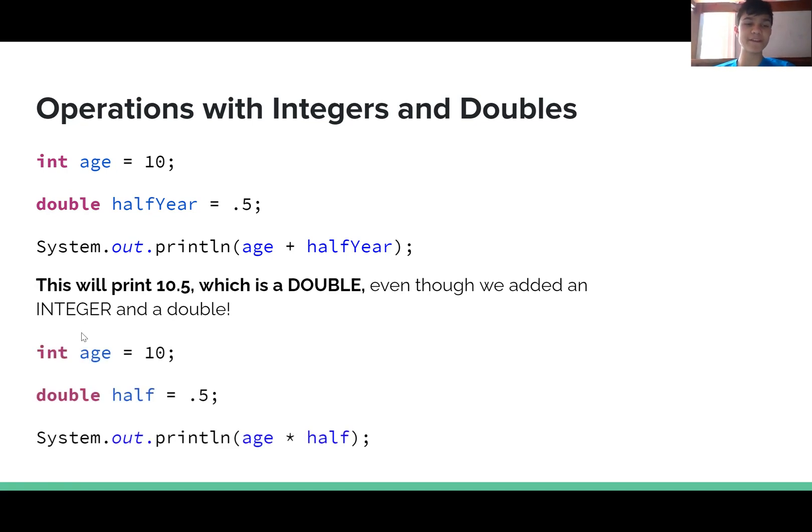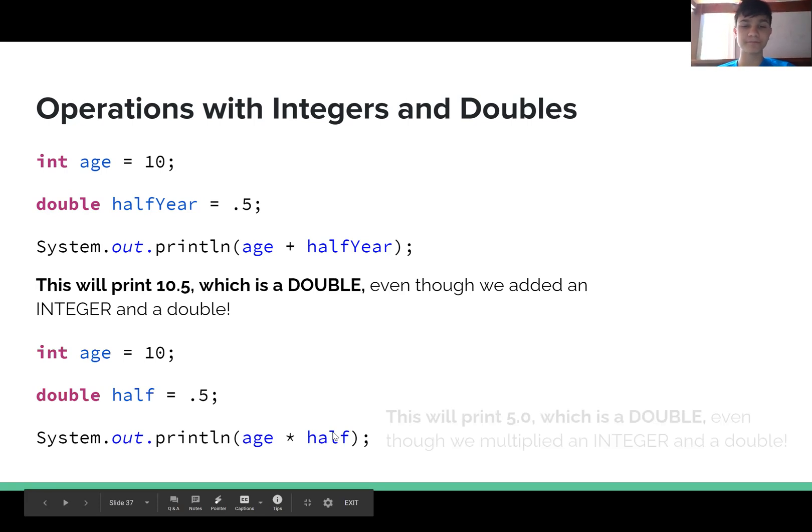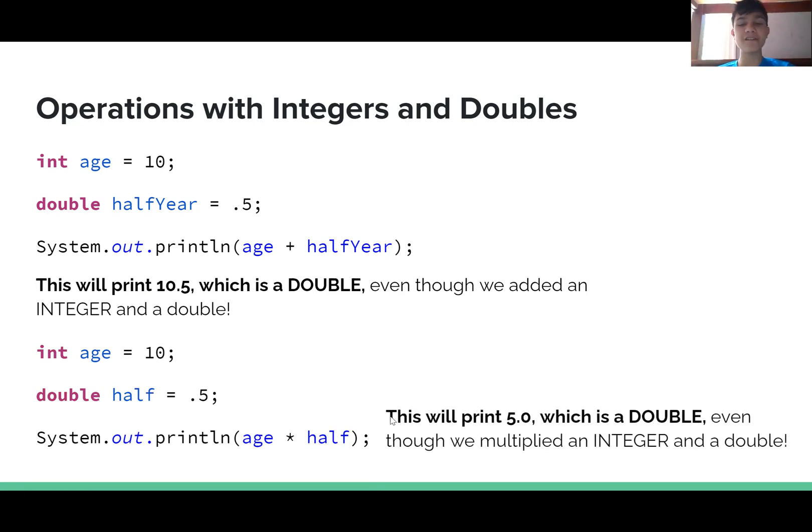Here is another example. Int age equals 10, double half equals 0.5. So we want to figure out half of our age, so we have age times half. This will put 5.0, which is a double even though we multiplied an integer and a double. 5.0 is a whole number but is a double because of the .0.